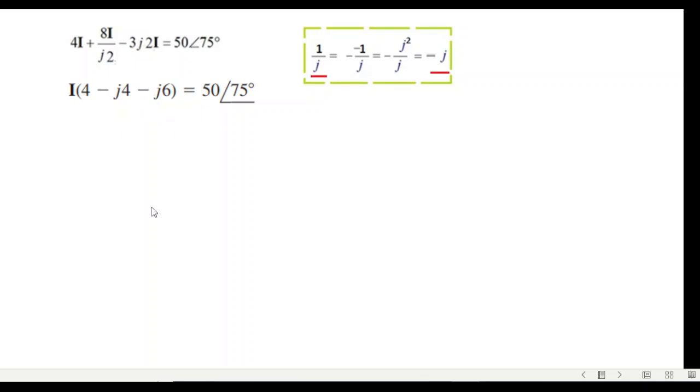And now we'll simplify. Simplifying, this will be 4 minus j10, and 50∠75°. So i will be 50∠75° divided by this term. And in the basic level, it is better that we follow the teaching. That is, for the division, both terms have to be in the polar form. Now this is in rectangular form. So we'll convert this into polar form.